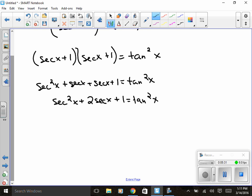So I'm going to rewrite that tangent squared of x because I've got the secant twice already. So I've got secant squared of x plus two secant x plus one and that's going to equal secant squared of x minus one.